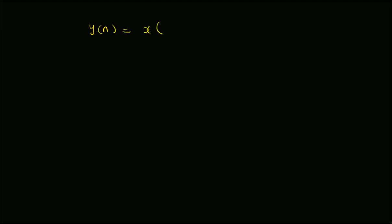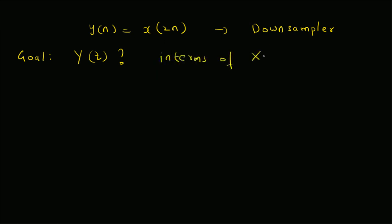Hello, welcome. In this short video, let us look at the Z-transform of downsampling. That is, we have the system function y(n) equal to x(2n), which is the downsampler. We want to find the Z-transform of y(n), that is, we want to find Y(z) in terms of X(z) — the relation between Y(z) and X(z). To solve this problem, first we need to consider the following relation, that is, we have to first understand what x(2n) means.